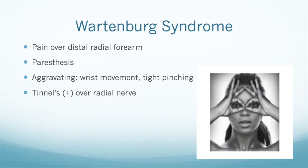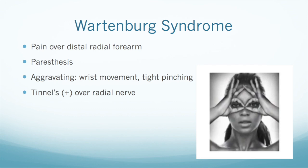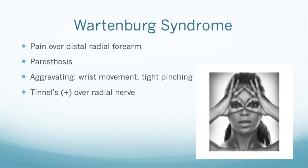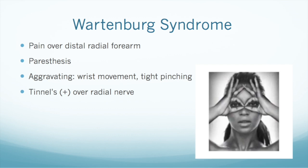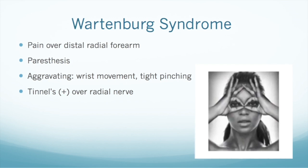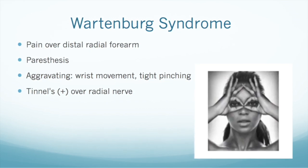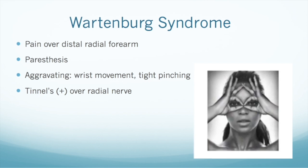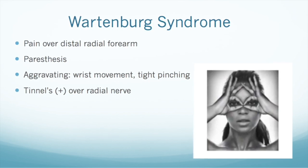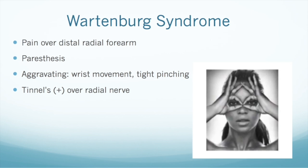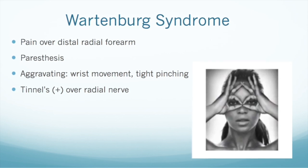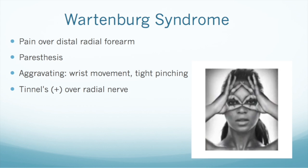The last condition discussed is Wartenberg syndrome, which is a compression of the superficial sensory radial nerve. This can cause paresthesia over the dorsal radial hand. It will be painful for these patients to perform a pinching of the thumb and index finger in an OK sign. A high percentage of these patients will present similarly to de Quervain's tenosynovitis, but their Finkelstein's test may or may not be positive.